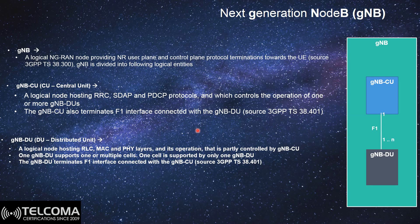The Distributed Unit handles the lower layers — specifically three layers: RLC, MAC, and the Physical layer. The operation of the Distributed Unit is partly controlled by the Central Unit. It supports one or multiple cells, and it terminates the F1 interface which connects back to the Central Unit. With this new concept, the gNodeB is divided into two main parts.